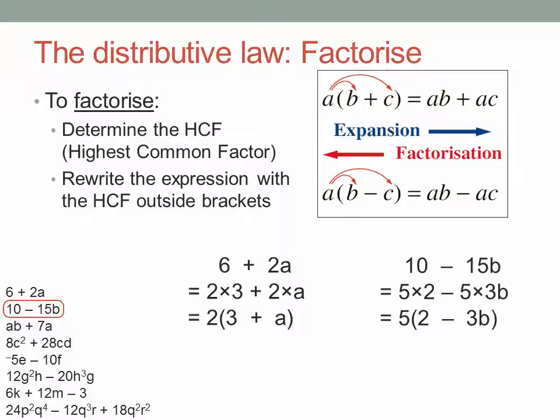Can you check it? What do you get if you expand those brackets again? 5 times 2, which is 10, minus 5 times 3b, which is 15b. Good.